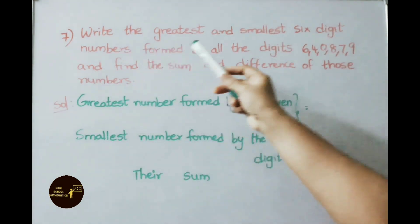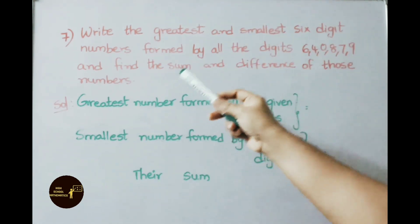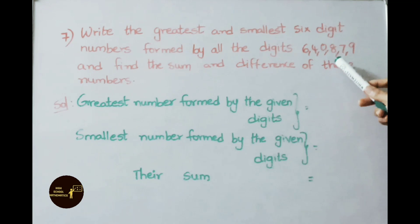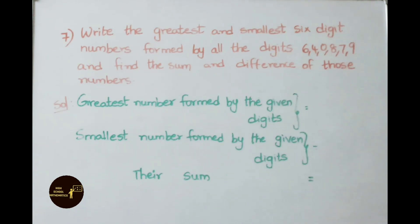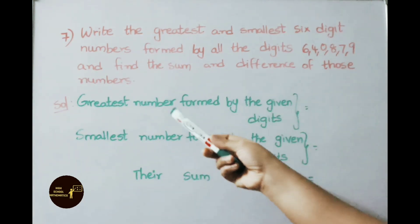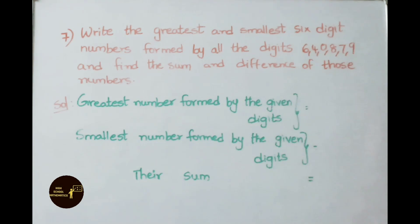So the answer is 90,110. Therefore, successful candidate got 90,110 votes more than the defeated candidate. See the seventh sum: Write the greatest and smallest six-digit numbers formed by all the digits 6, 4, 0, 8, 7, 9, and find the sum and difference of those numbers. So write down highest to lowest given digits: 9, 8, 7, 6, 4, 0. And from right to left, split them in Indian system with commas.